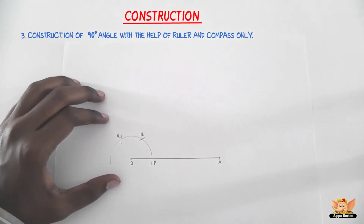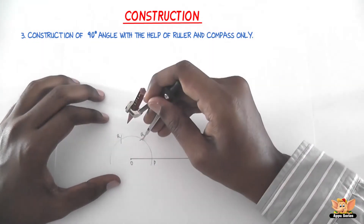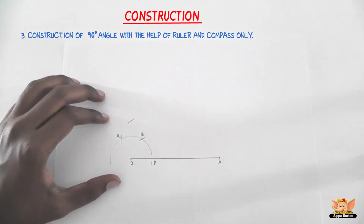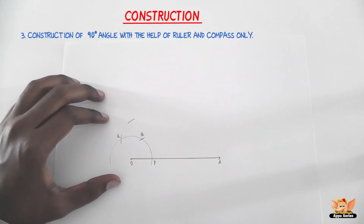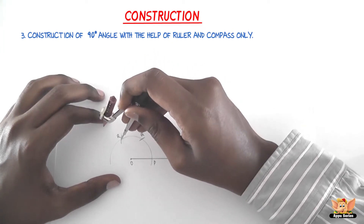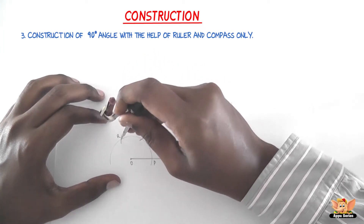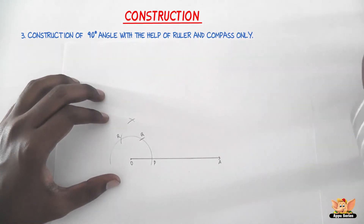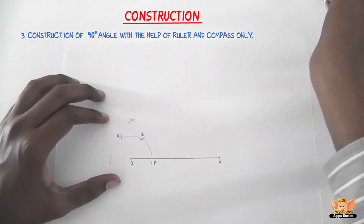The fifth step is with Q as center and the same radius, draw an arc cutting the arc that we just drew from Q. The sixth step is with R as center and the same radius, draw an arc cutting the arc that we just drew from Q. Now name this new point as B.